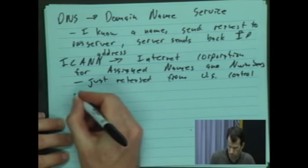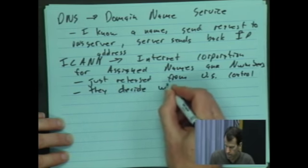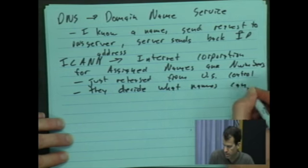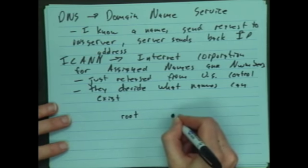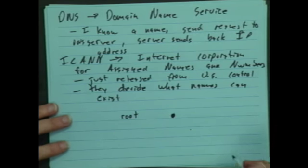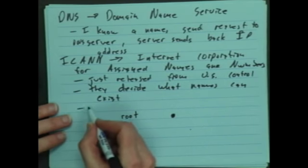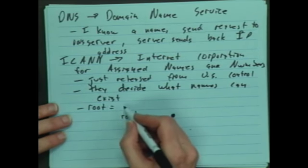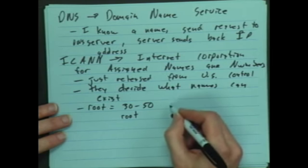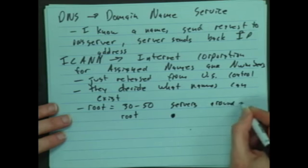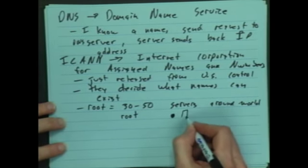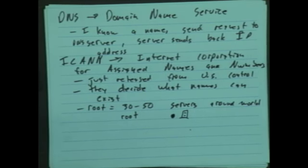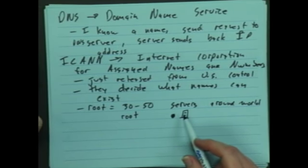So how does it work in general? They decide what names can exist — they control what we call the root. You may have heard the dot in dot-com; the root of the Domain Name Service is the root. There are between 30 and 50 servers around the world, and they are the authoritative root. Any name I want to look up really needs to start at the root — it's like the master record of everything.